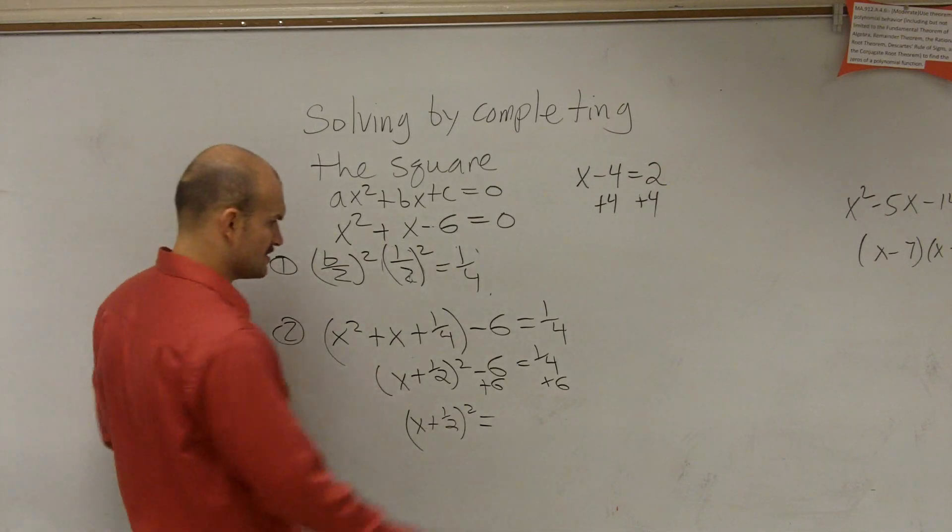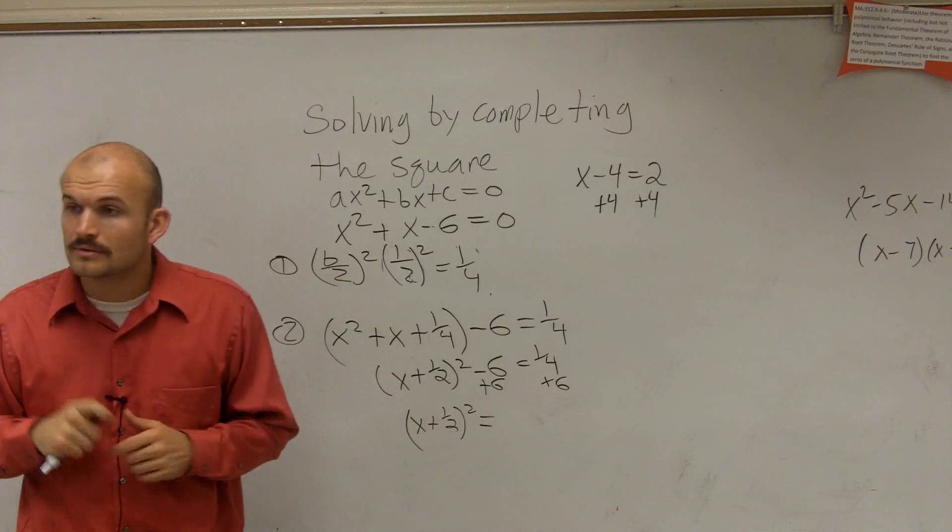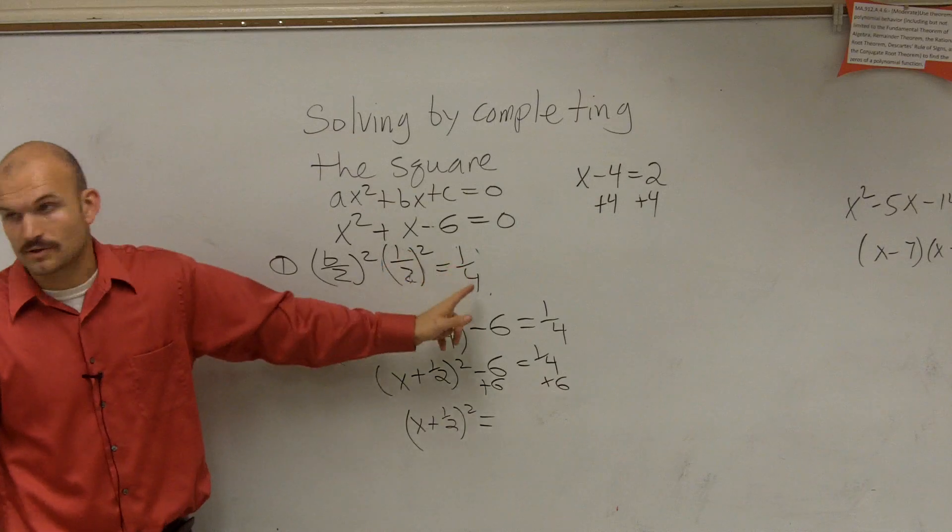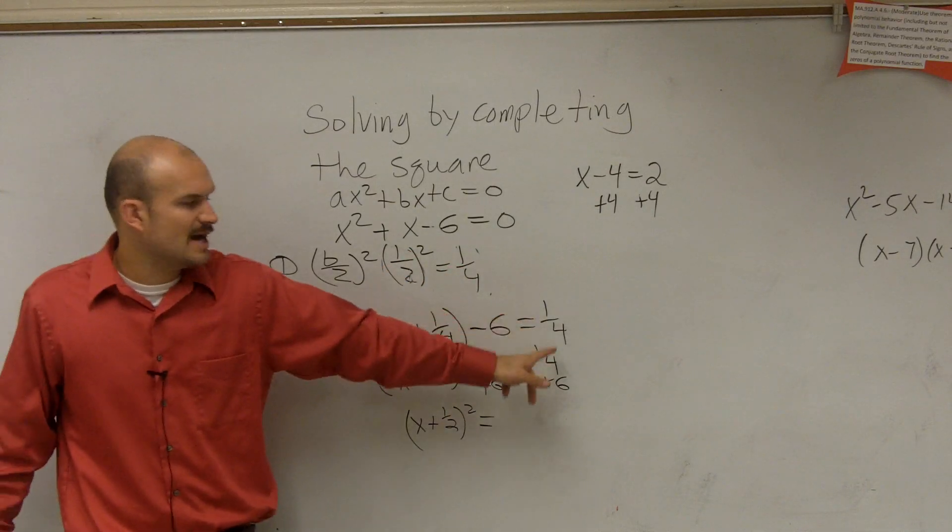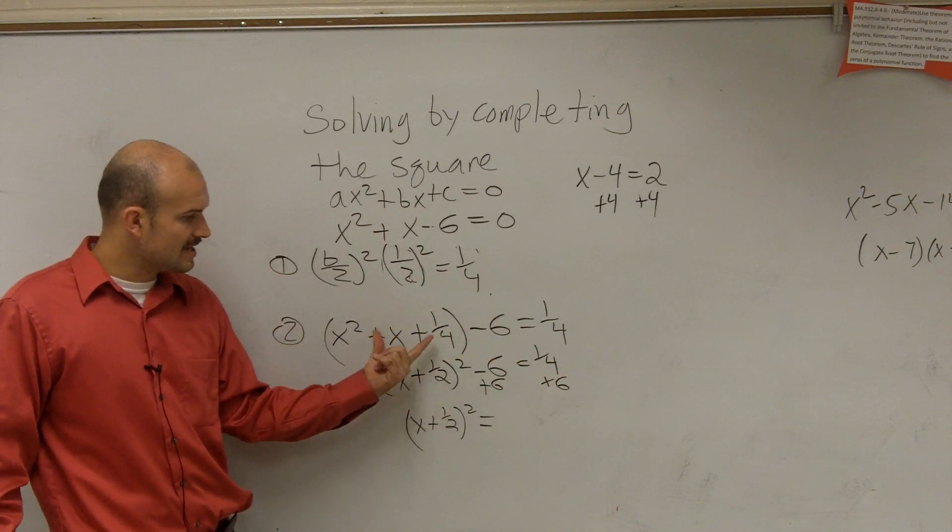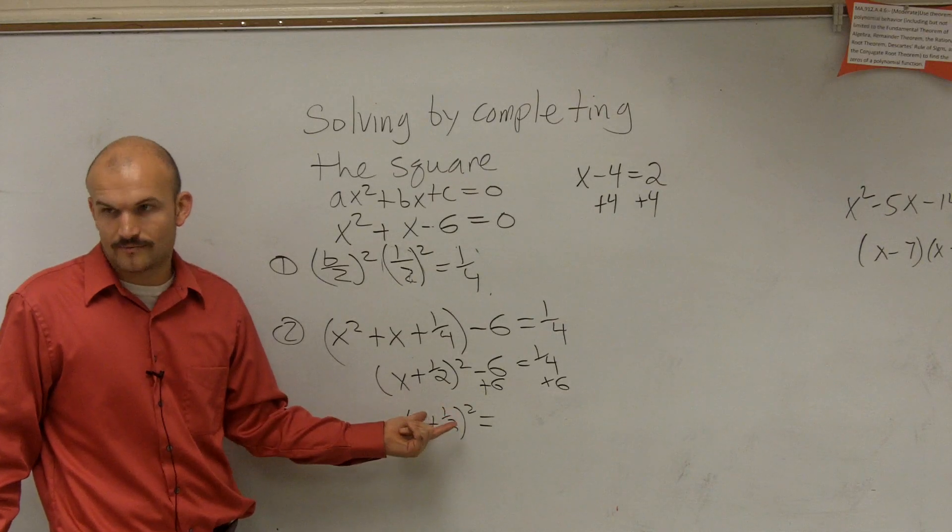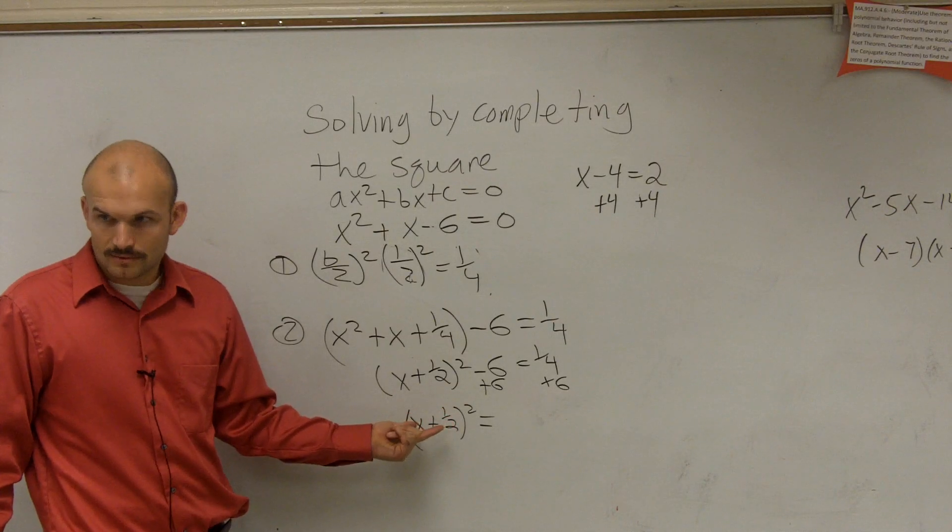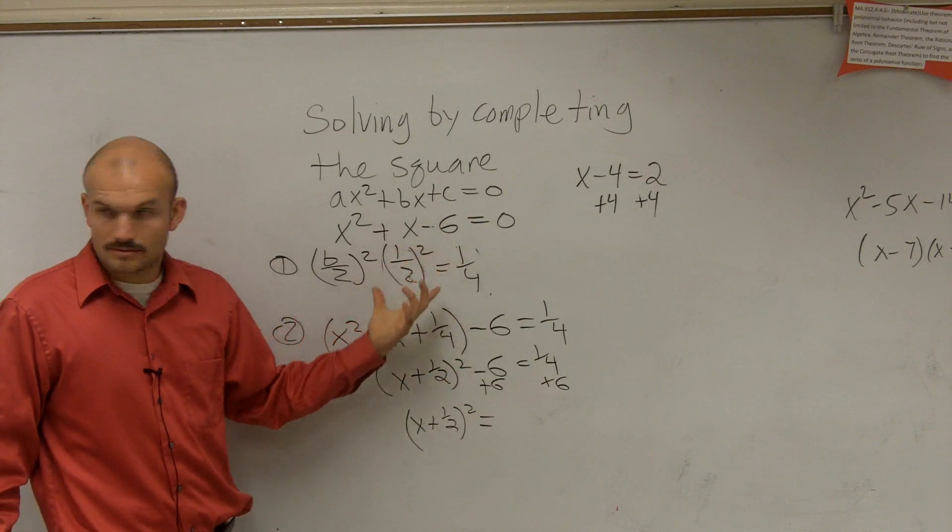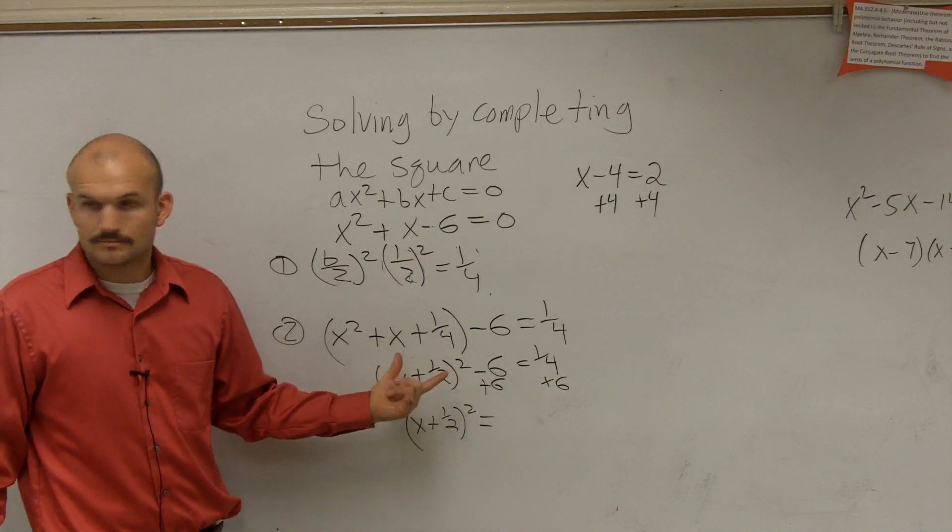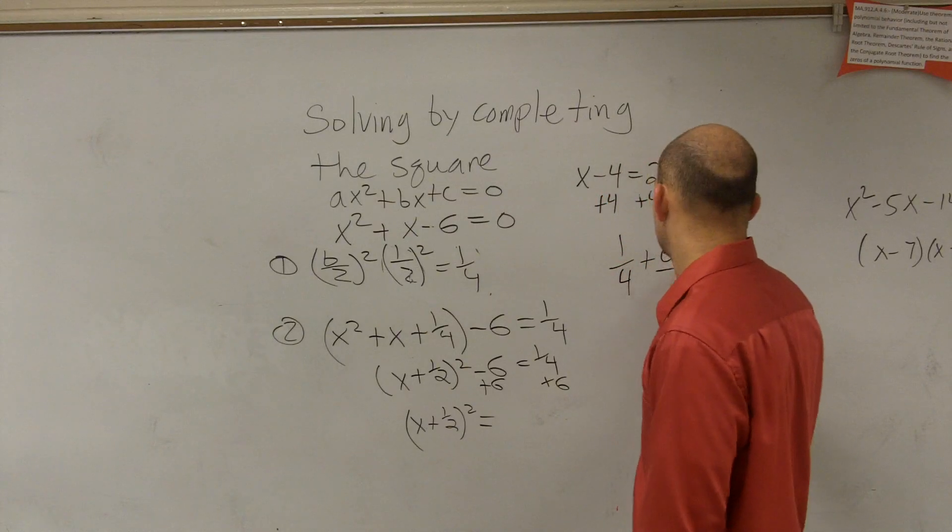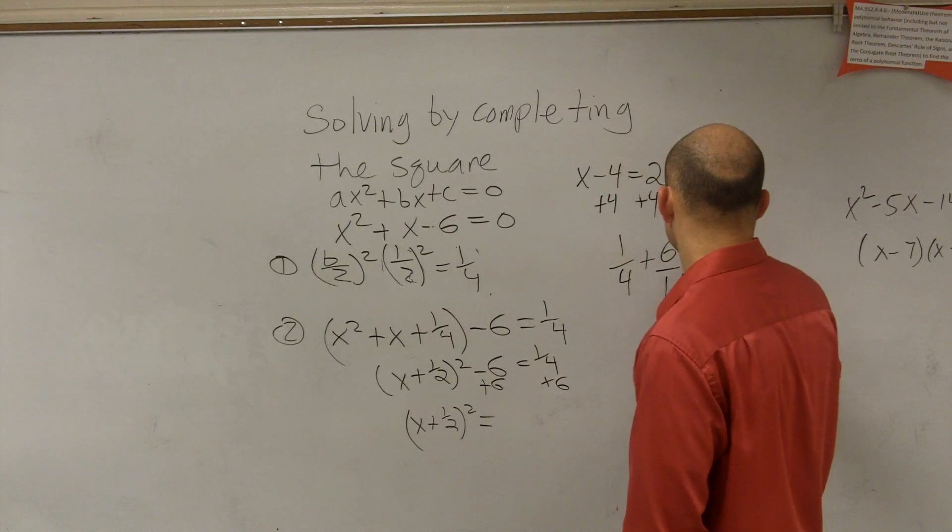So you're going to have 25 over 4. How did it turn to 1 fourth? 1 half squared is 1 fourth. You add 1 fourth on the left side and you add 1 fourth on the right side. Then, this is a perfect square trinomial. So this can be rewritten as x plus 1 half squared. But why do you say 6? I don't have to do this. Okay.